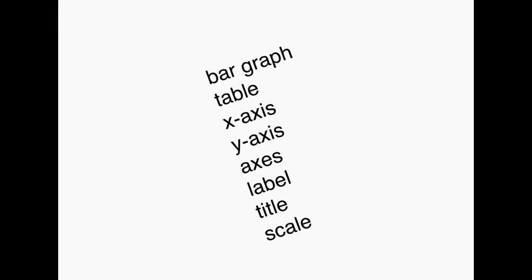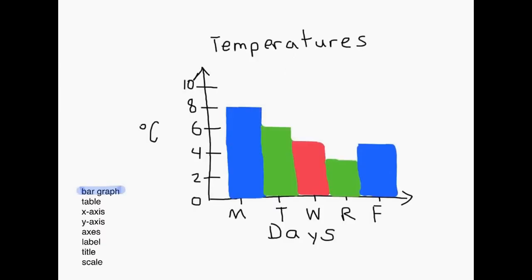In this video I am going to teach you how to read a bar graph and show you the vocabulary that goes with it. A bar graph is a graphic representation of something. For example, down here at the bottom we have days of the week and temperatures along the side. So we can see in a very visual way how hot or cold it is on a certain day. Monday we see it's 8 degrees, Tuesday 6 degrees, and so on. This shows us a nice visual representation in order to compare several things at once.